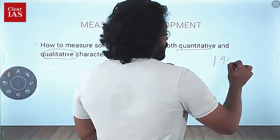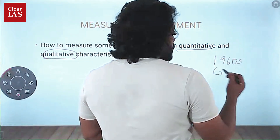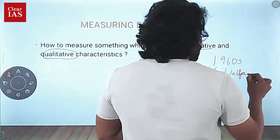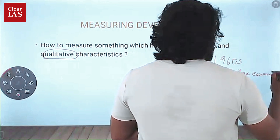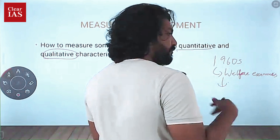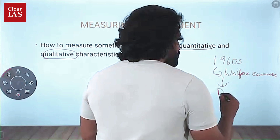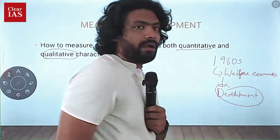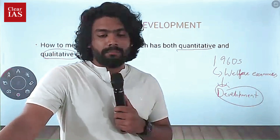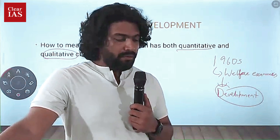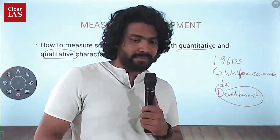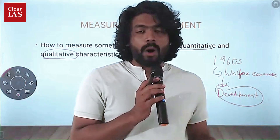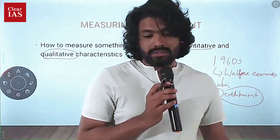In the 1960s, the first major thing that came up was the welfare economics concept. Growth was actually differentiated from development, and the concept of development was identified as a major thing. Mahbub ul Haq and Amartya Sen — they are the first two economists in the world who actually got the Nobel Prize for bringing up the idea of how development is different from economic growth.